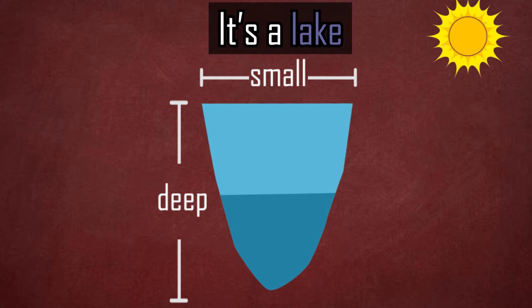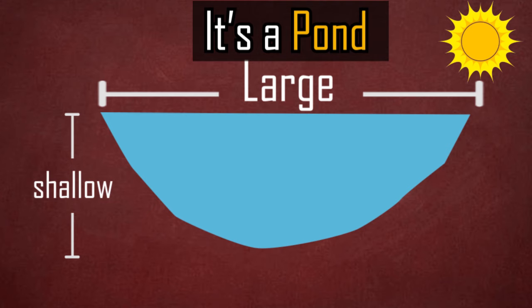Conversely, a body of water may be large in size, but very shallow. Is it a pond or a lake? It's still a pond, because it's not that deep. The sunlight can reach all the way to the bottom.